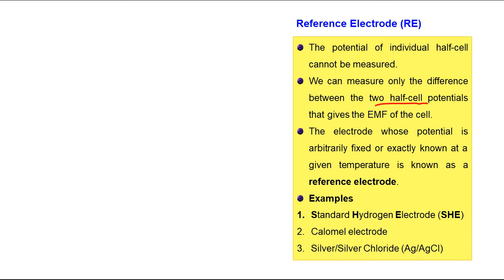Similarly, there must be some reference electrode based on which we can measure the potential of other systems. An electrode whose potential is arbitrarily fixed or exactly known at a given temperature is known as a reference electrode. There are three examples, and one of them is SHE — the Standard Hydrogen Electrode. We will focus on SHE.